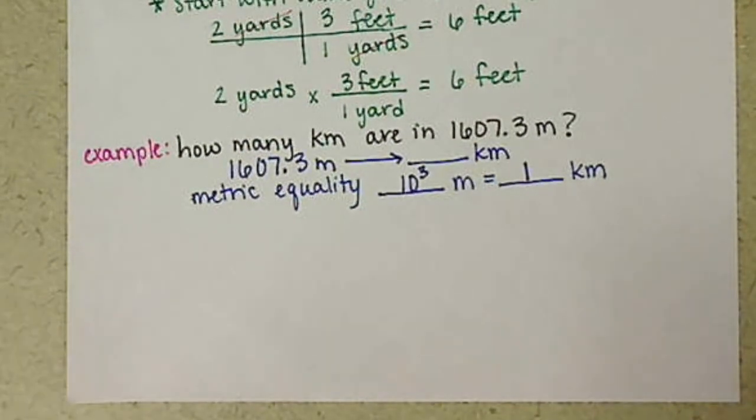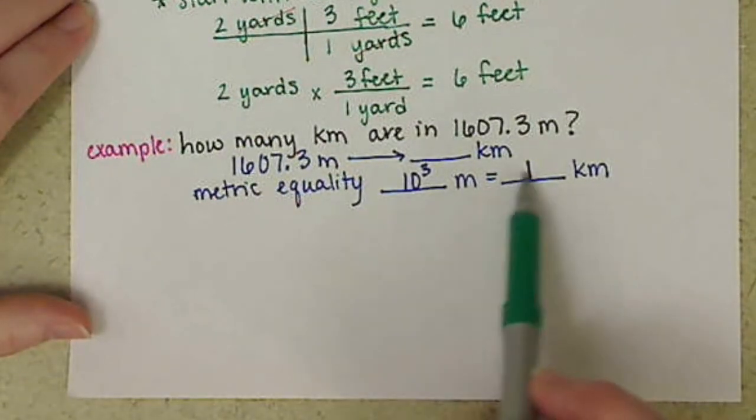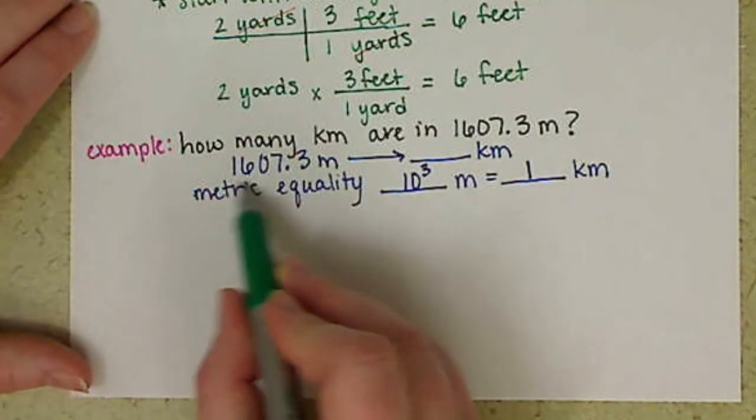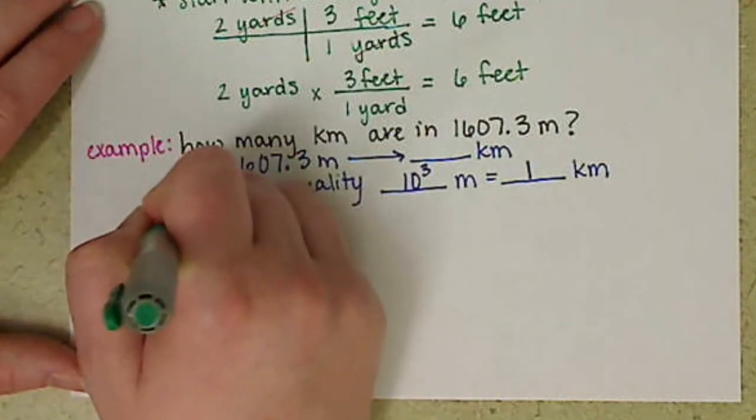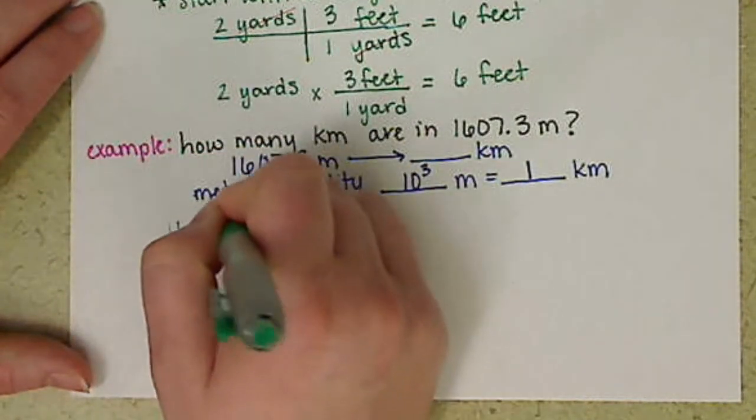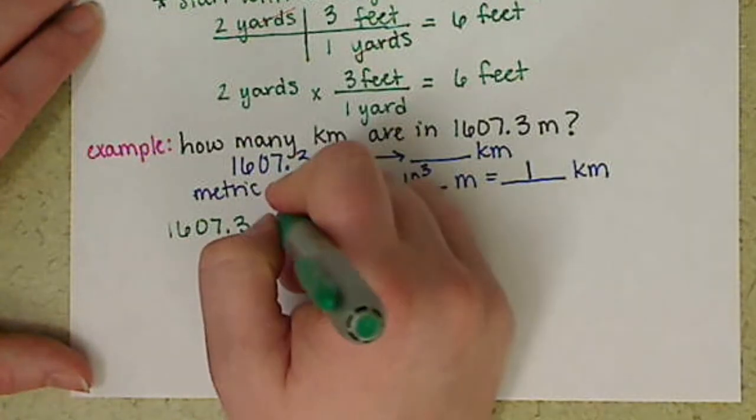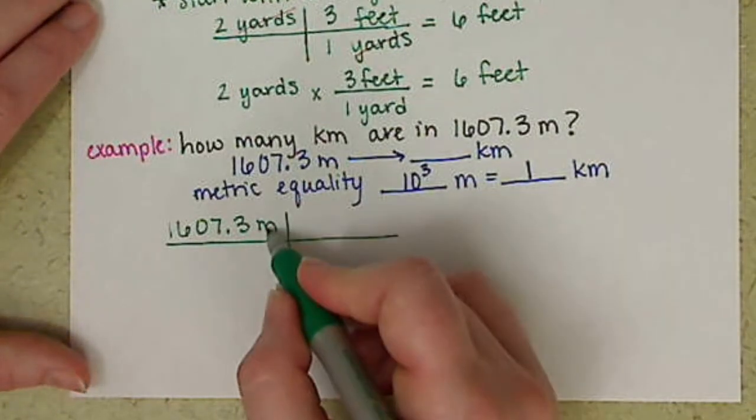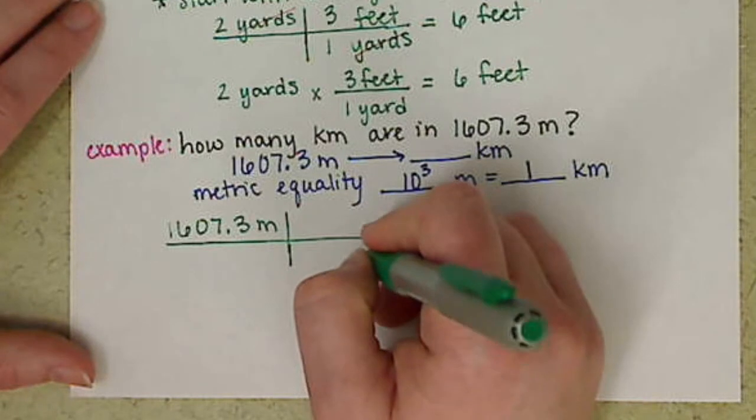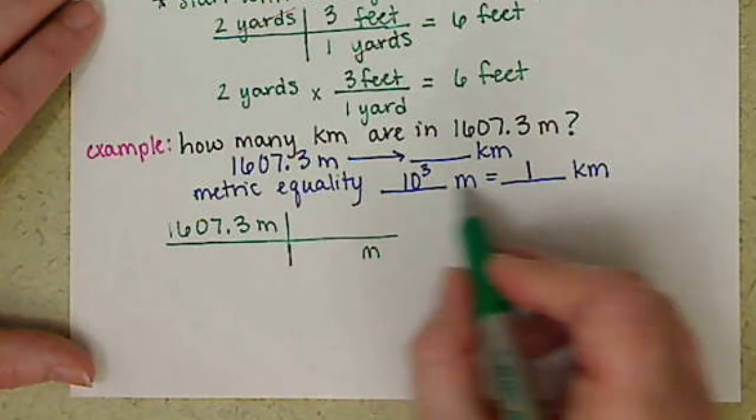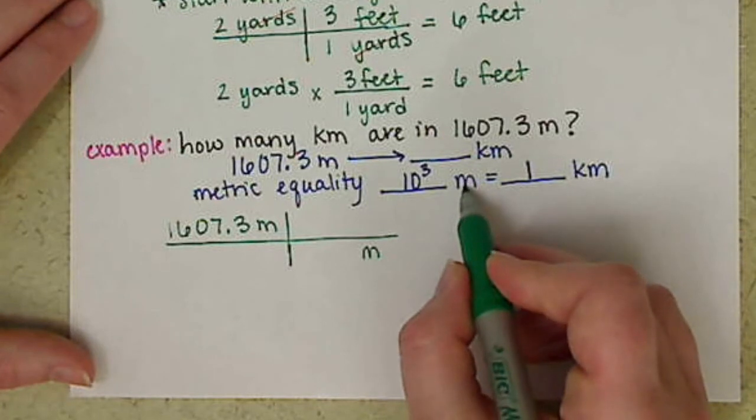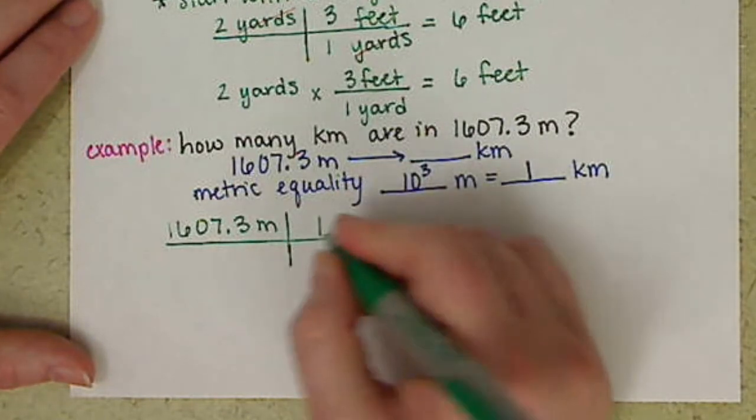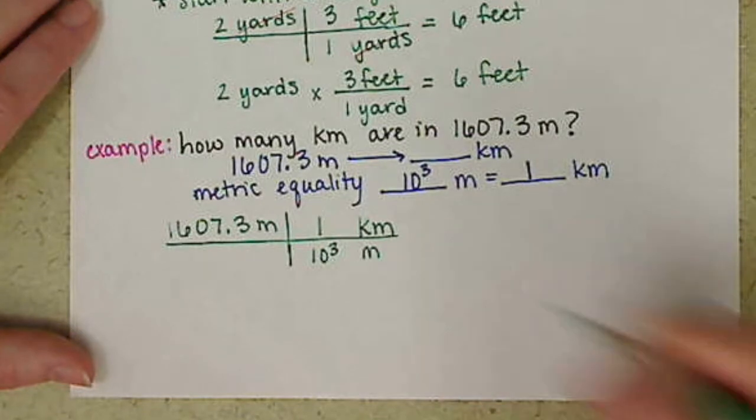Now we want to do our calculation. Remember, we don't want to start with our equality; we always want to start with a number that was given. In this case, we have our 1607.3 meters. Set up our conversion factor, our railroad. We have meters in the top, so we want to put meters in the denominator. We're using this equality so we're going to be able to convert from meters to kilometers. Our one goes with the kilo, 10 to the 3 with the meters.